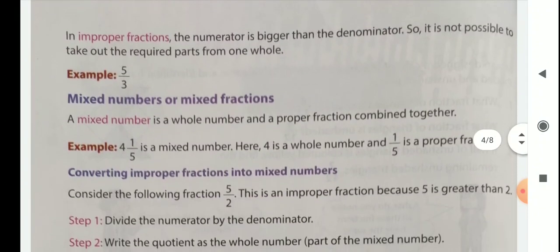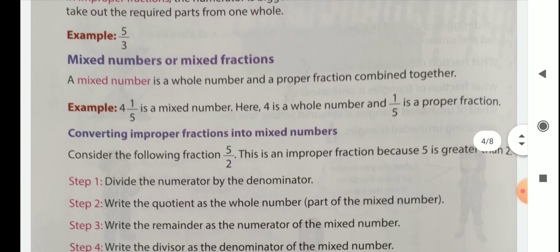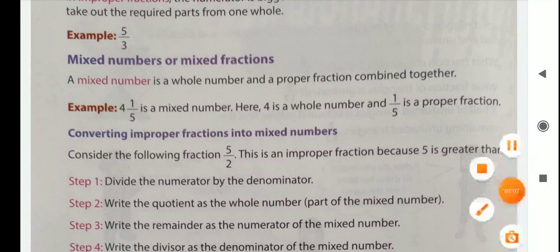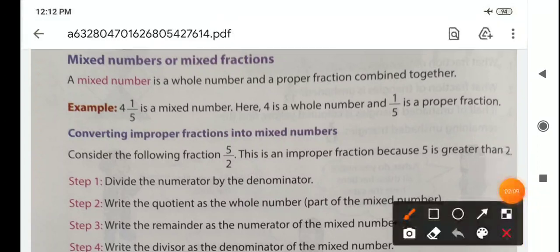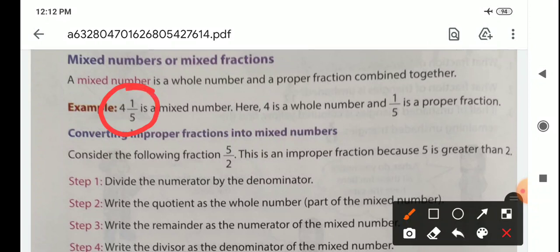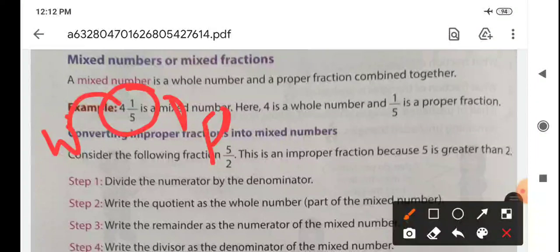Then mixed numbers or mixed fractions. A mixed number is a whole number and a proper fraction combined together. For example, 4 whole 1 by 5. Here 4 is a whole number and 1 by 5 is a proper fraction.